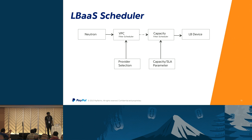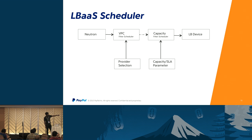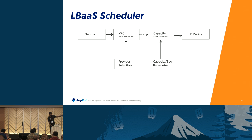Whenever there is a need to do a VPC creation or pool creation, it goes through a list of schedulers. The VPC filter scheduler gives the corresponding provider, and based on that provider the corresponding plugin is used so the VPC is created in the corresponding LB device. It runs through the list of filter schedulers and finally the LB device is selected and used.